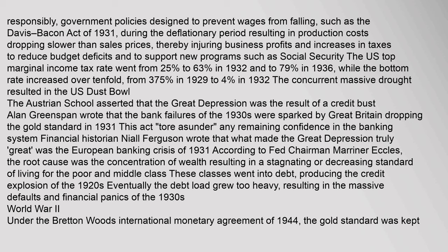The U.S. top marginal income tax rate went from 25% to 63% in 1932 and to 79% in 1936, while the bottom rate increased over tenfold from 0.375% in 1929 to 4% in 1932. The concurrent massive drought resulted in the U.S. Dust Bowl. The Austrian School asserted that the Great Depression was the result of a credit bust. Alan Greenspan wrote that the bank failures of the 1930s were sparked by Great Britain dropping the gold standard in 1931. Financial historian Niall Ferguson wrote that what made the Great Depression truly great was the European banking crisis of 1931. According to Fed Chairman Mariner Eccles, the root cause was the concentration of wealth resulting in stagnating or decreasing living standards for the poor and middle class, leading to the credit explosion of the 1920s and eventually the massive defaults of the 1930s.